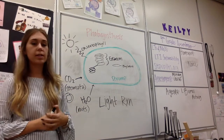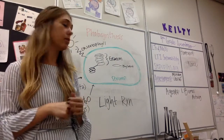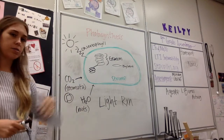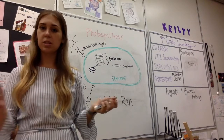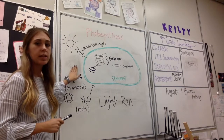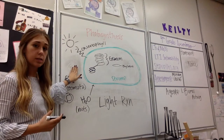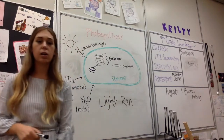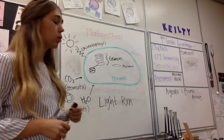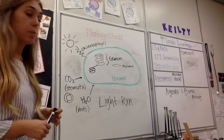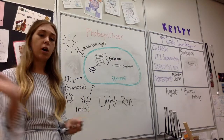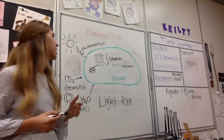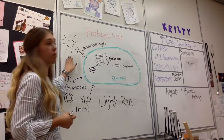Next we have water. Water is coming up through the roots and through the xylem all the way up to the leaf where photosynthesis is occurring. Finally we have light, which can come from sunlight or, as you saw in our lab, it can also come from just a light bulb. When light energy enters our leaf, it's through photons. Photons are absorbed by the chlorophyll, which are right here in the thylakoid membranes inside the chloroplast. Chlorophyll is a pigment that appears green to us because it absorbs all visible light energy except green, which is reflected off.